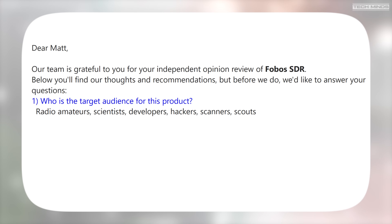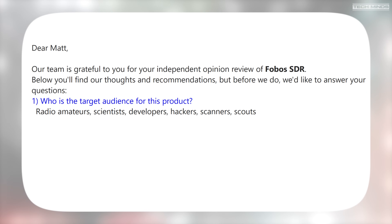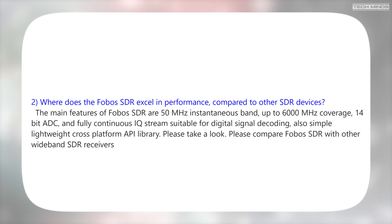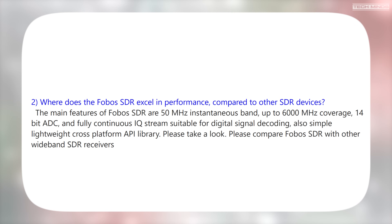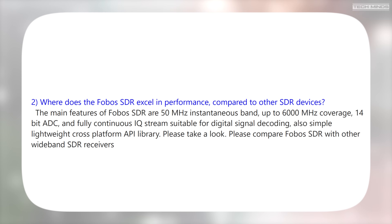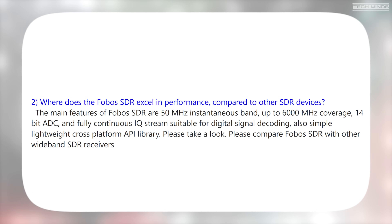The first question I asked RigExpert was: who is the target audience of the Phobos SDR? Their answer was: radio amateurs, scientists, developers, hackers, scanners, and scouts. The next question was where does the Phobos SDR excel in performance compared to other SDR devices? Their reply emphasized the main points: 50 MHz instantaneous bandwidth, up to 6 GHz coverage, and a 14-bit ADC. Generally I do not like to compare two SDR receivers as I do not like to favor one manufacturer over another.